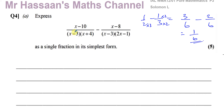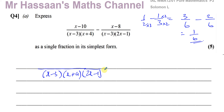Similarly, we have to express the algebraic fractions with the same denominators. We have x minus 3 times x plus 4, and x minus 3 times 2x minus 1. To make the first the same as the second, it needs to be multiplied by 2x minus 1. To make the second the same as the first, it needs to be multiplied by x plus 4. So the common denominator is x minus 3 times x plus 4 times 2x minus 1.